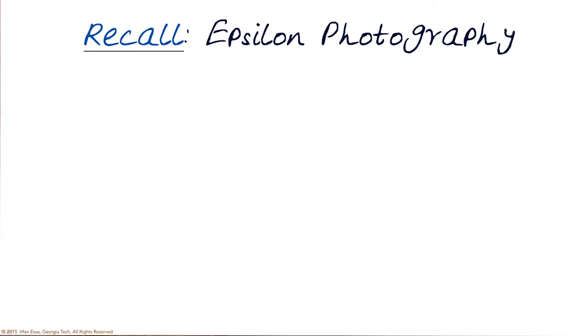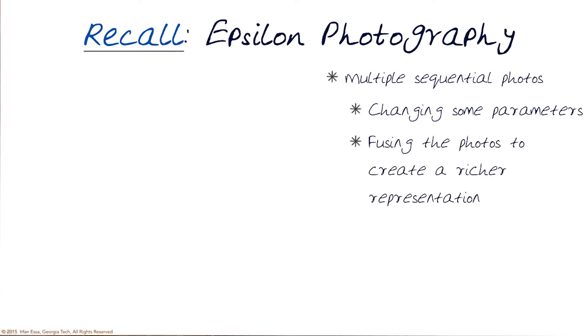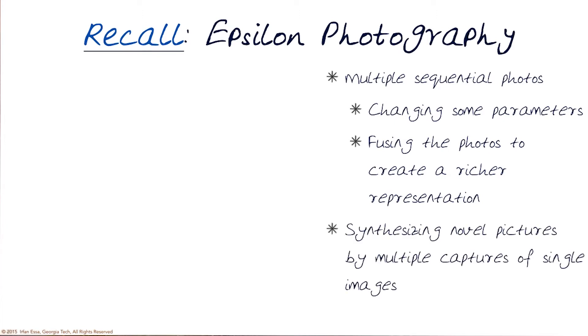Recall the concept of epsilon photography, something you should be familiar with from your assignment of capturing a sequence of pictures. Epsilon photography aims to capture a sequence of different pictures where we change one parameter by just a minute amount — a very small epsilon amount — to capture the variations in a scene. We then fuse the different pictures together to create a richer representation that captures a scene in a variety of conditions, which can be used to synthesize novel pictures by taking multiple captures of a single scene to generate a newer image.